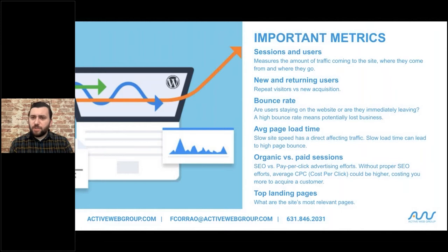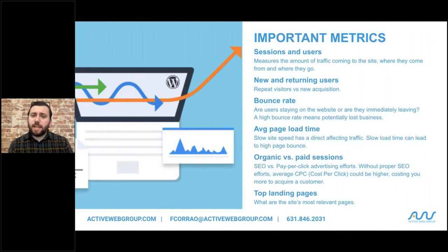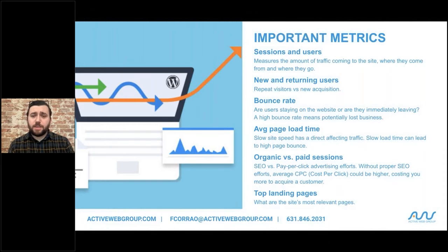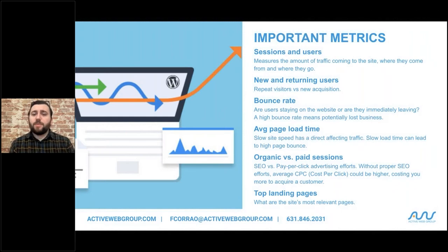Going over important metrics — these are the things I measure in Google Analytics, which we'll discuss next week. These are the action points and metrics I want to see to know who's converting and if my efforts are actually working. Sessions and users measure the amount of traffic coming to the site. For example, I had 10 users that visited my website and they had 15 sessions, so on average the page visits are about 1.5. New and returning visitors — these are repeat visitors versus new acquisitions.